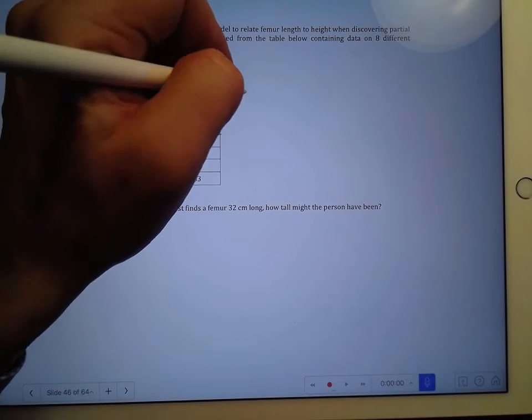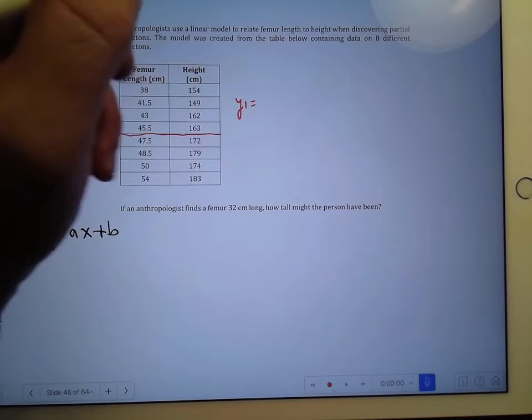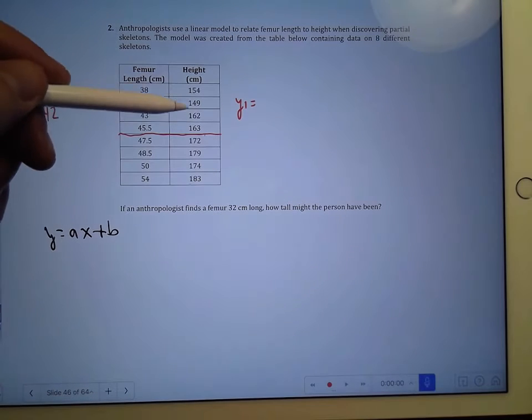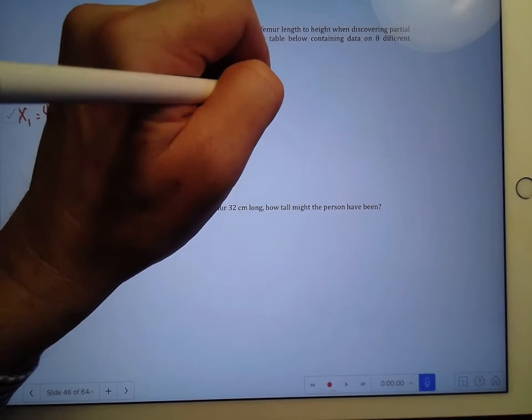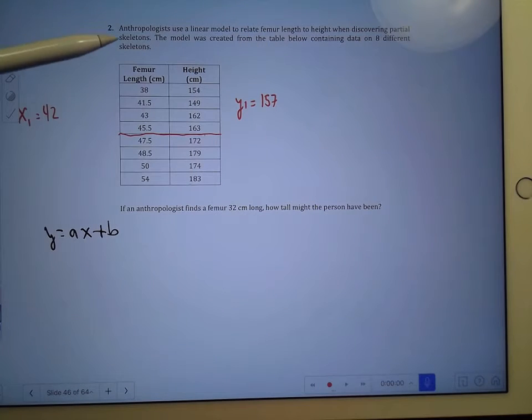On the y side for the y1, same thing. You're going to add up these 4 numbers, these 4 y's and average them, and when you do that you're going to get 157. And you can check my calculations if you want with your calculator, but you can trust me, they work out.